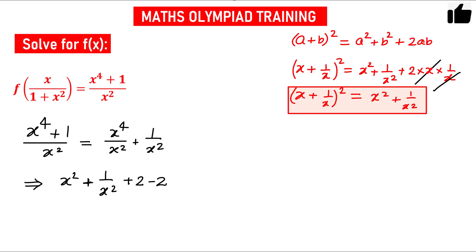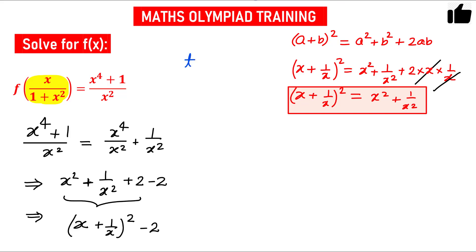Using this result, the right hand side becomes x plus 1 by x whole square minus 2. Now this is my right hand side. Let us focus on the left hand side. I can make a substitution — let us say t equals x divided by 1 plus x square. My target is to write the left hand side also in terms of x plus 1 by x, because the right hand side already contains x plus 1 by x.